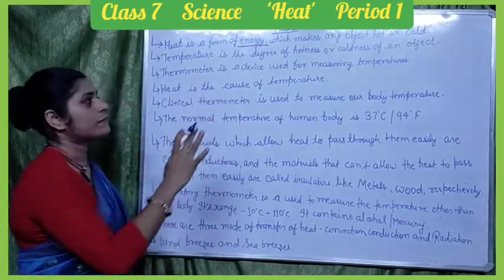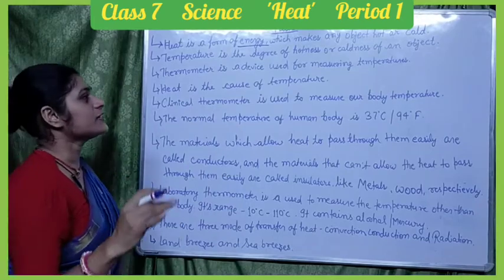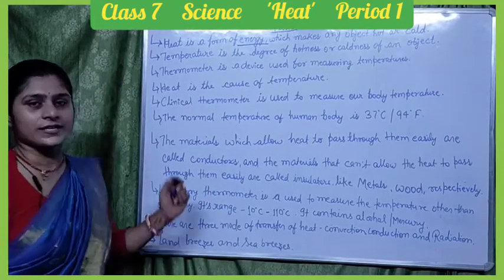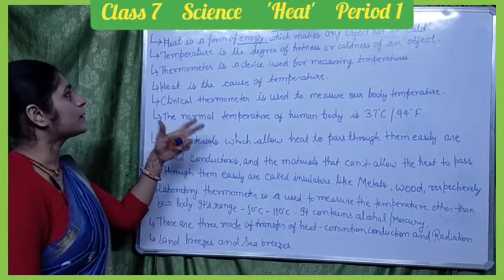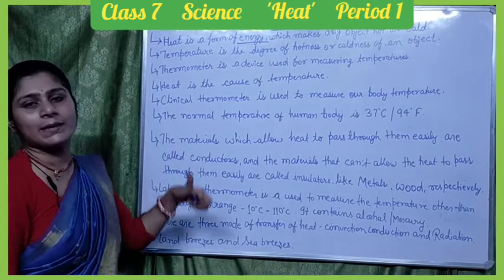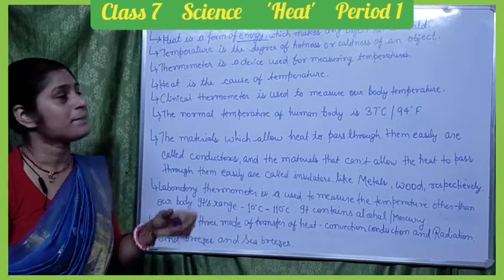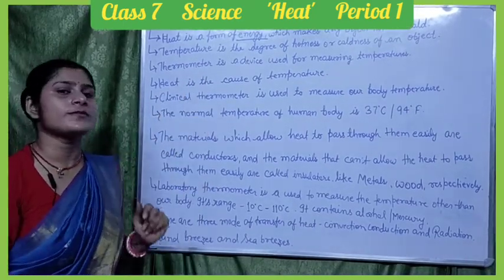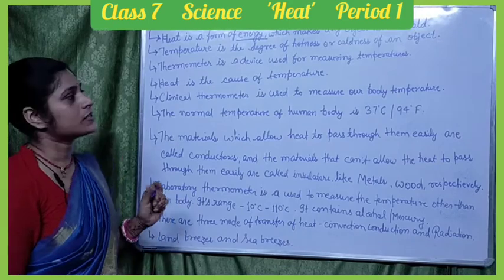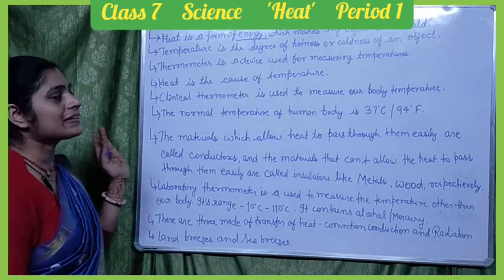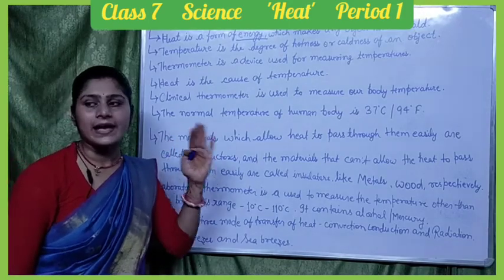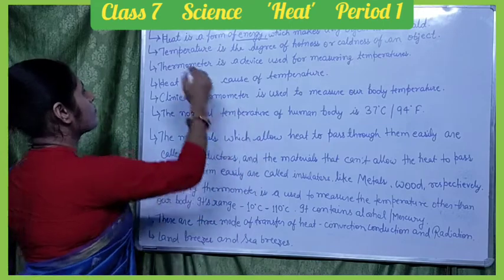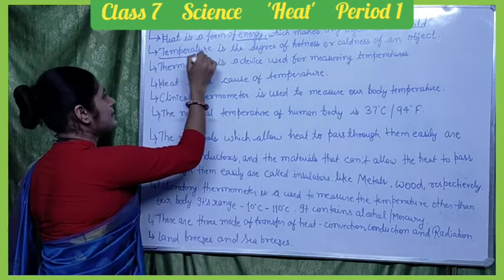Heat is a form of energy which makes any object hot or cold. Next is temperature. Temperature is the degree of hotness and coldness of any object — how much an object is hot or cold.